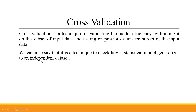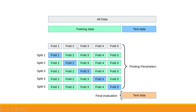Cross-validation is a technique for validating model efficiency by training it on a subset of input data and testing on a previously unseen subset. We can also see it as a technique to check how a statistical model generalizes to an independent dataset.